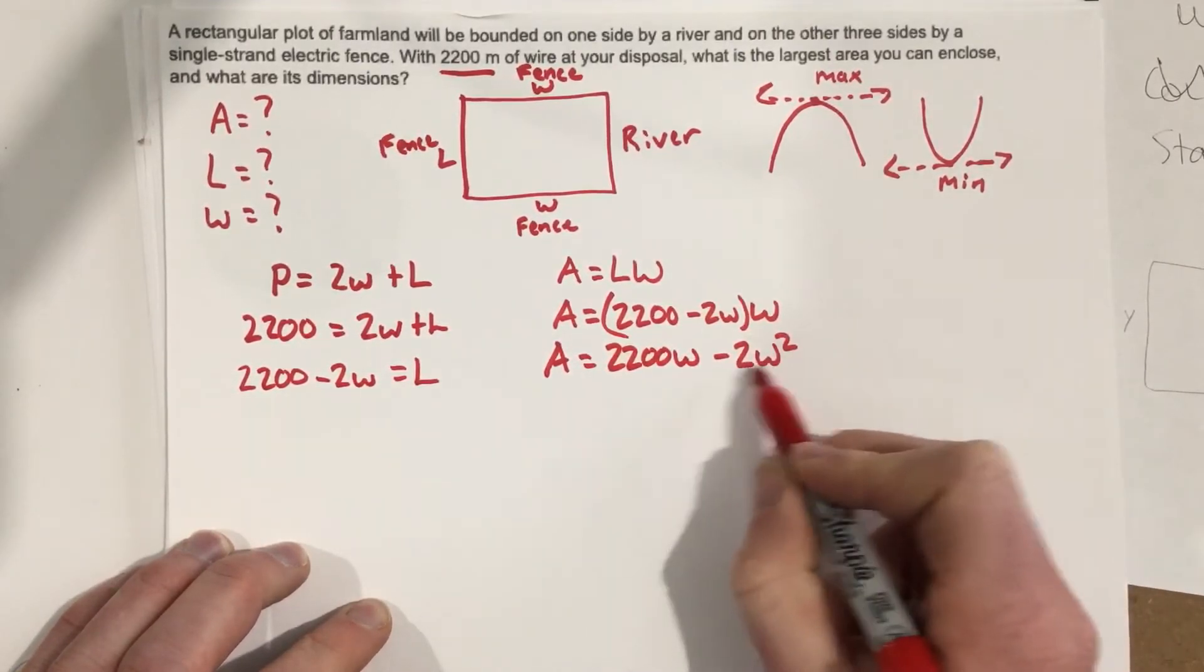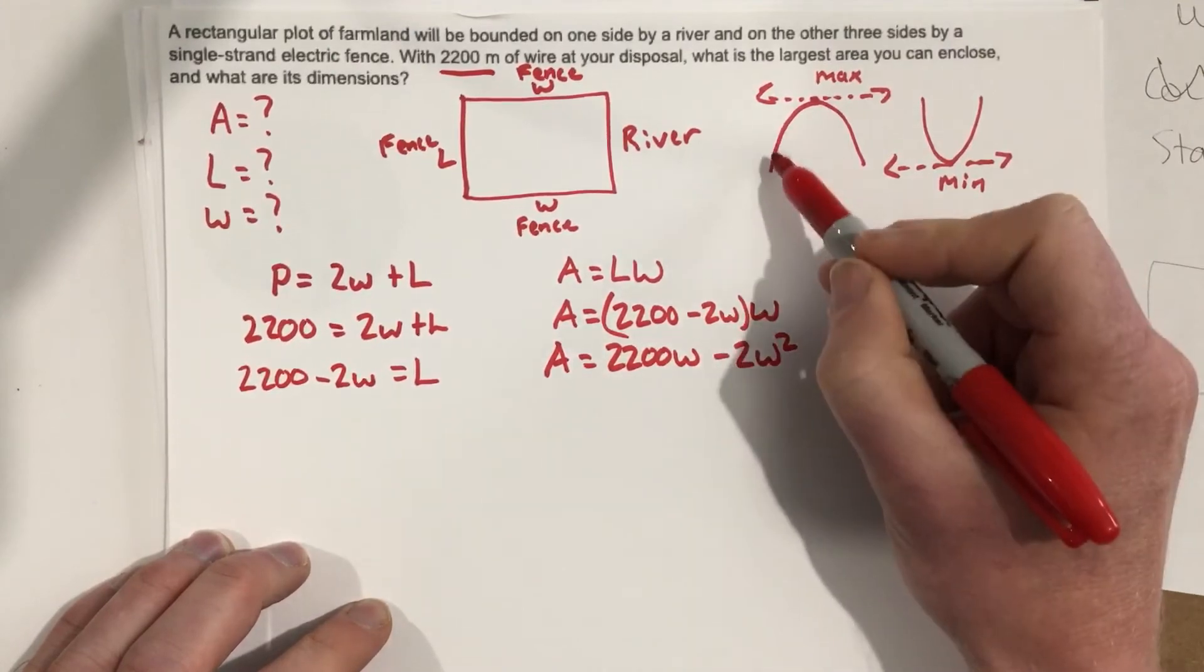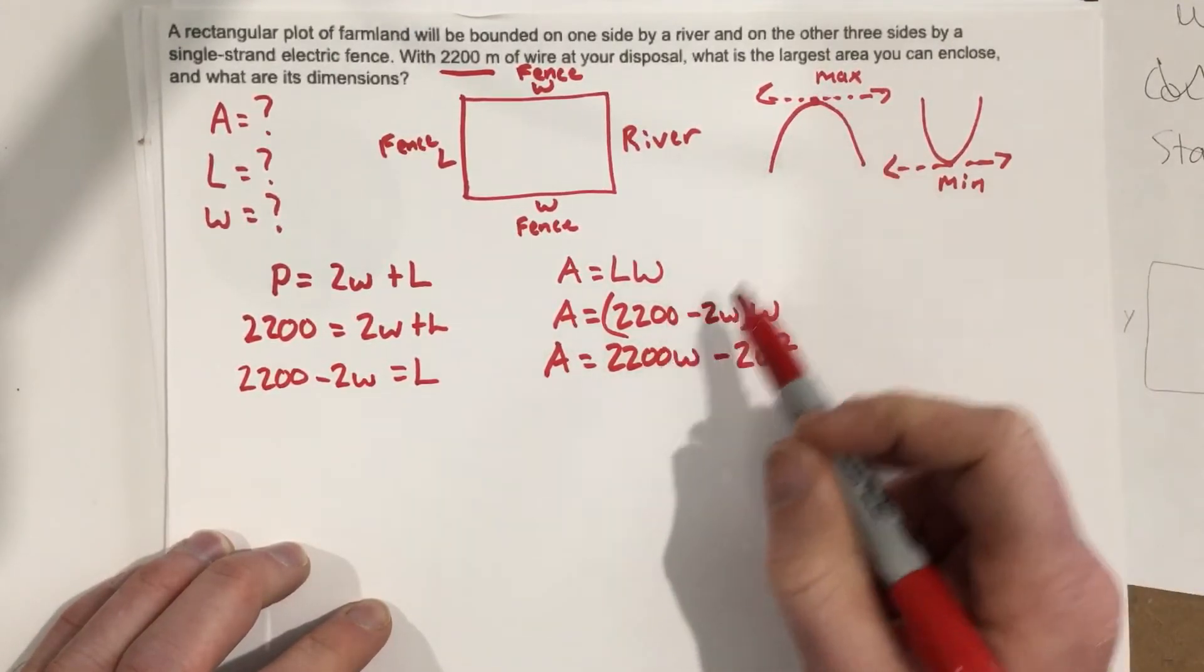And you'll notice, what do we have here? We have a parabola, and this is a downward facing parabola, and so we can find the maximum.